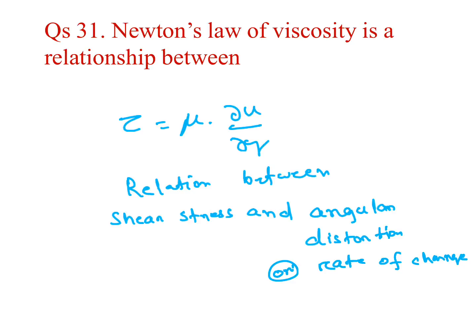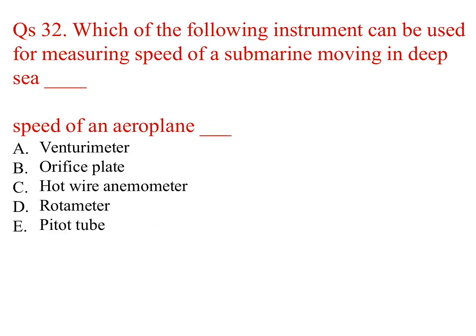Which of the following instrument can be used for measuring speed of a submarine moving in deep sea and speed of an aeroplane? Both answers are Pitot tube.